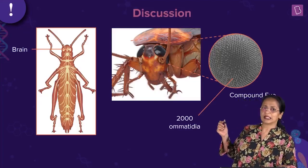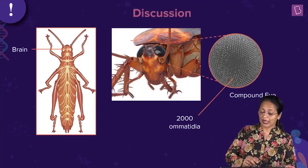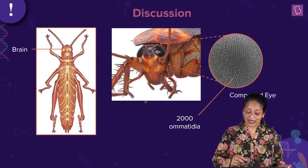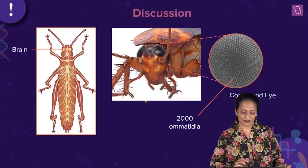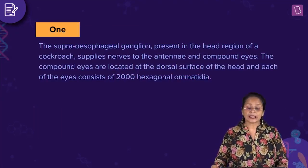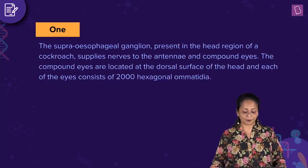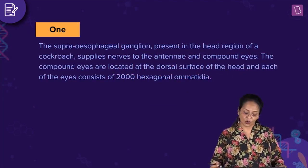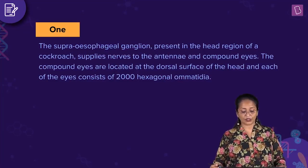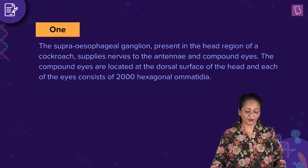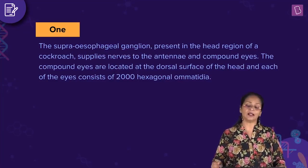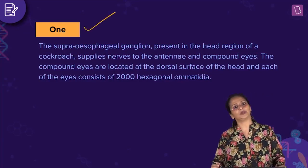These are the diagrammatic representations of the brain. In the second diagram you can see the eyes of the cockroach and this is how the compound eye looks. The supraesophageal ganglion present in the head region of a cockroach supplies nerves to the antennae and the compound eyes. The compound eyes are located on the dorsal surface of the head, and each eye consists of 2000 hexagonal ommatidia.